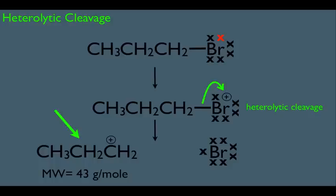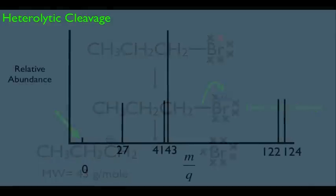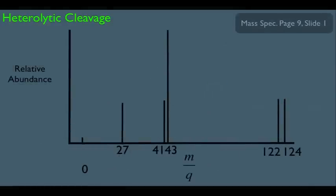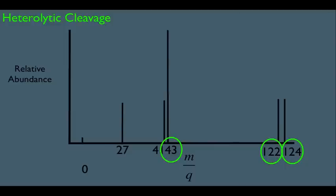We should expect to see a peak at 43. Looking at the mass spectrum of this molecule, we see the peak at 43, the molecular ion peak at 122, and the M+2 peak at 124 due to the bromine isotope. So alkyl halides can cleave heterolytically — another way these molecules fragment. But it's not only halogens that can cleave this way.